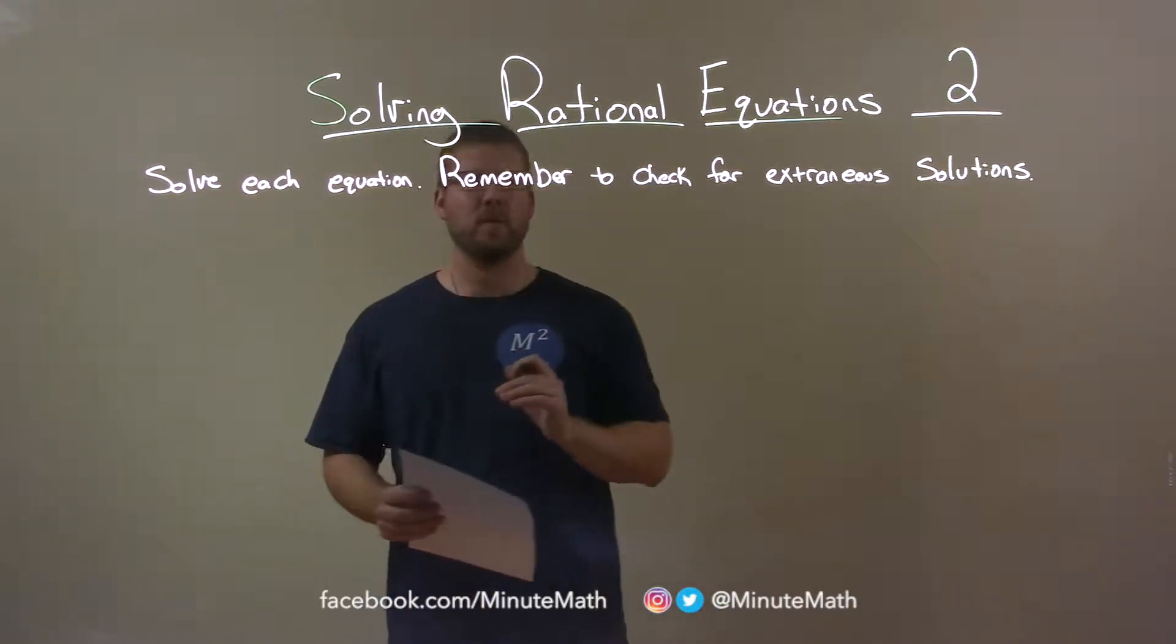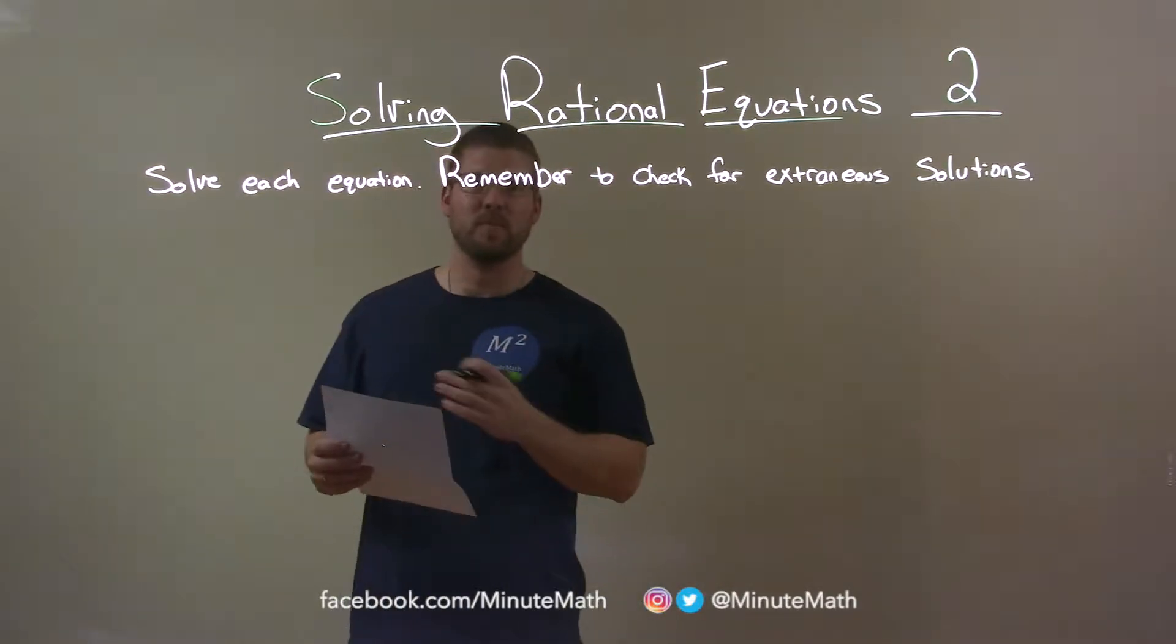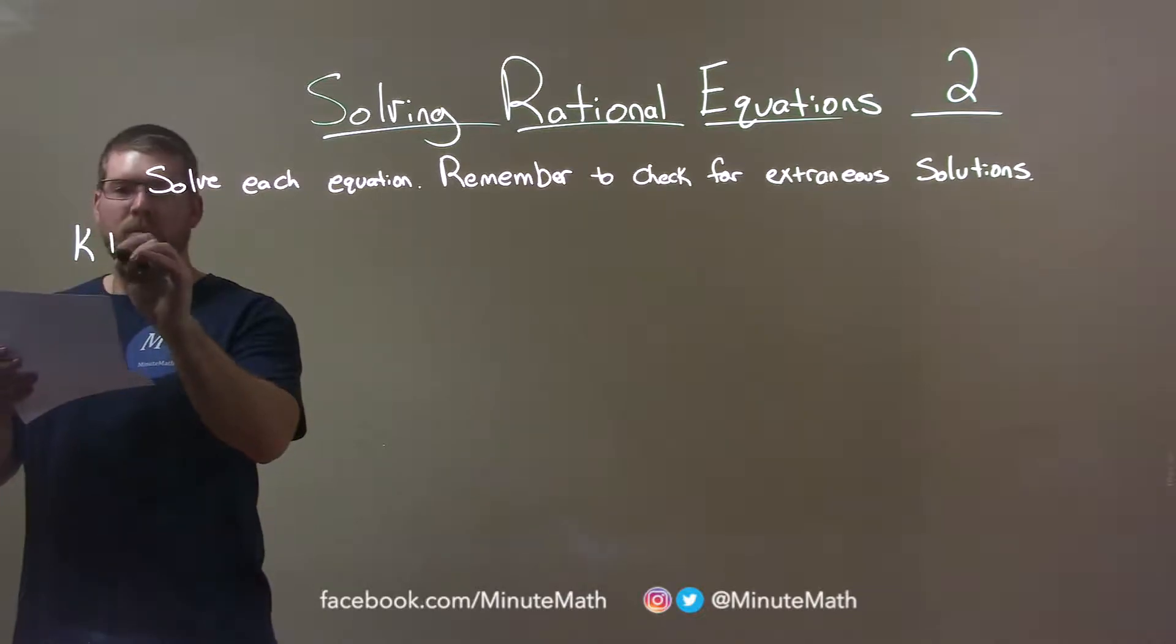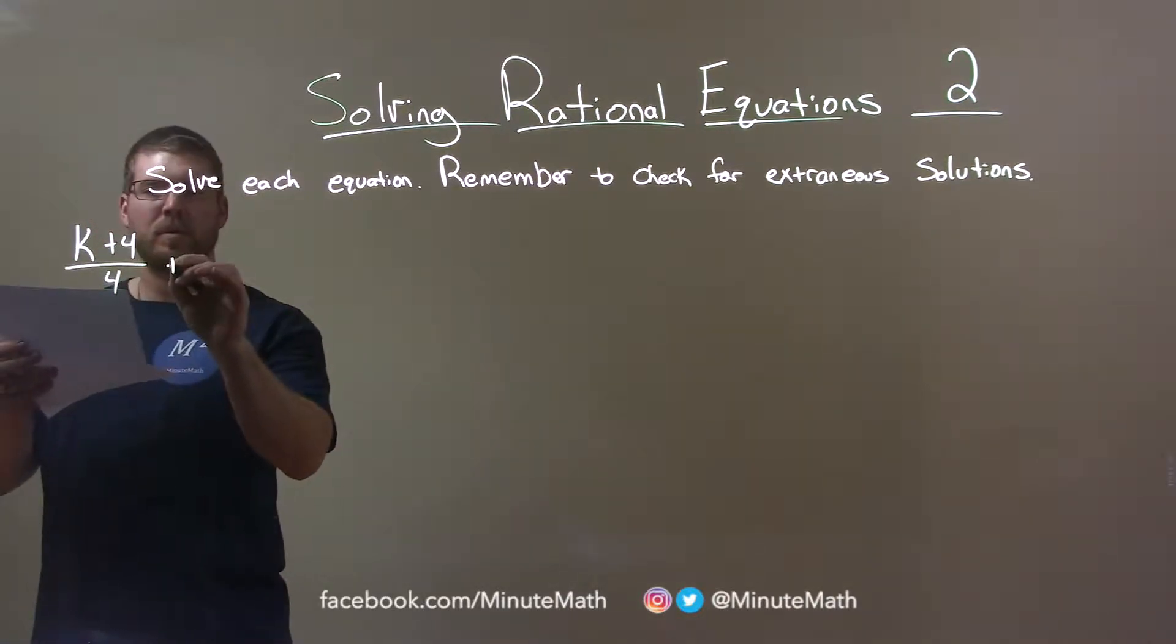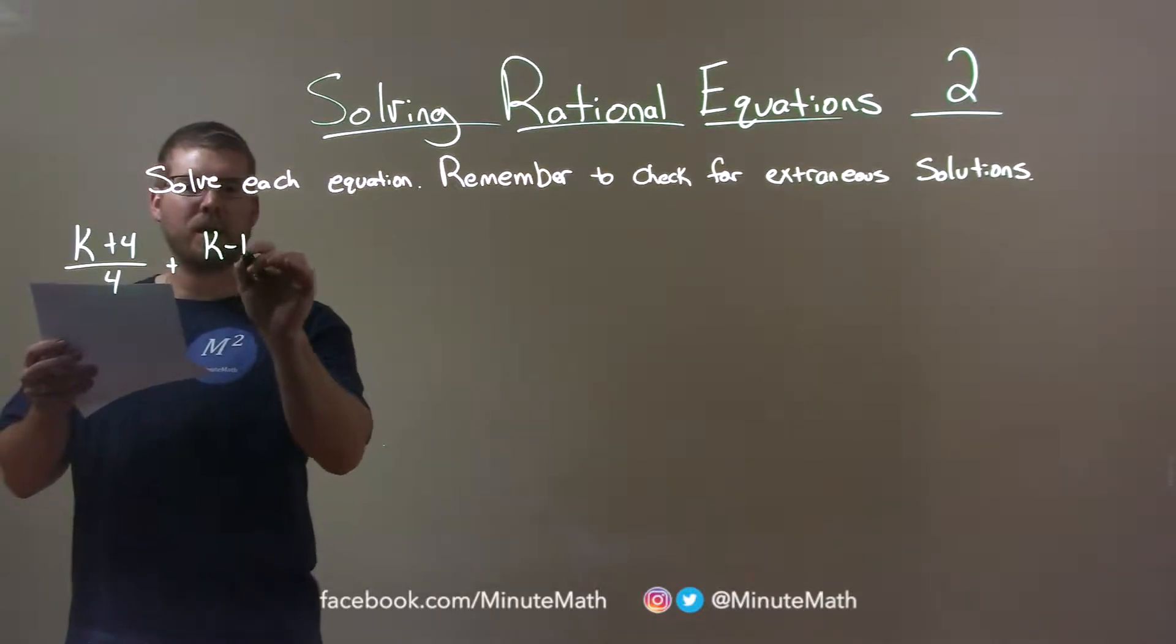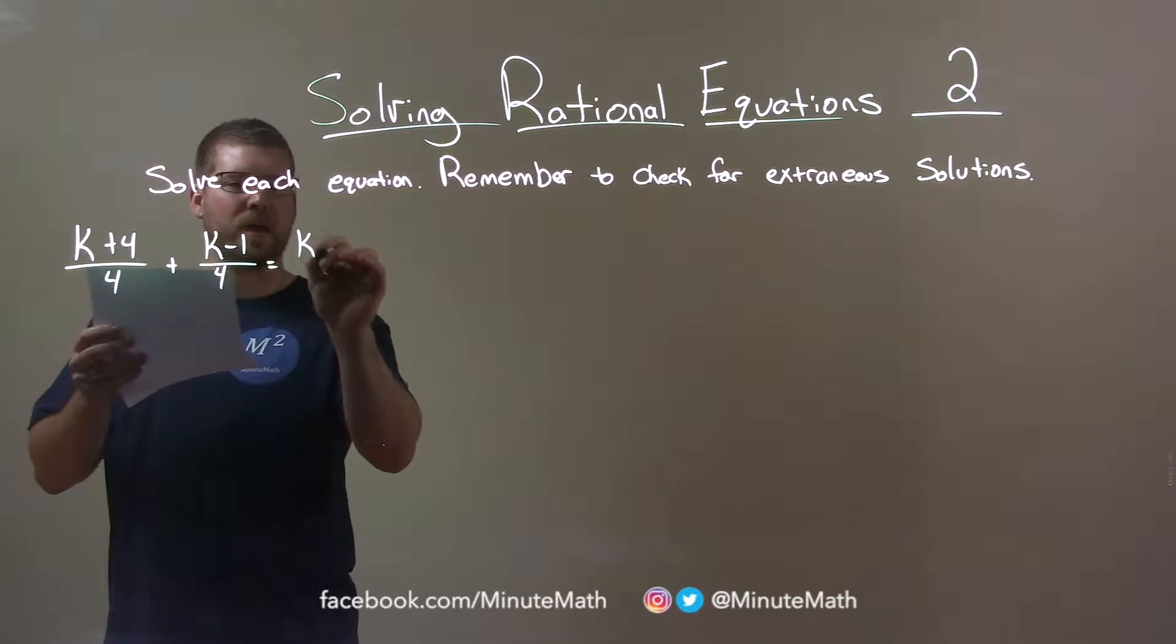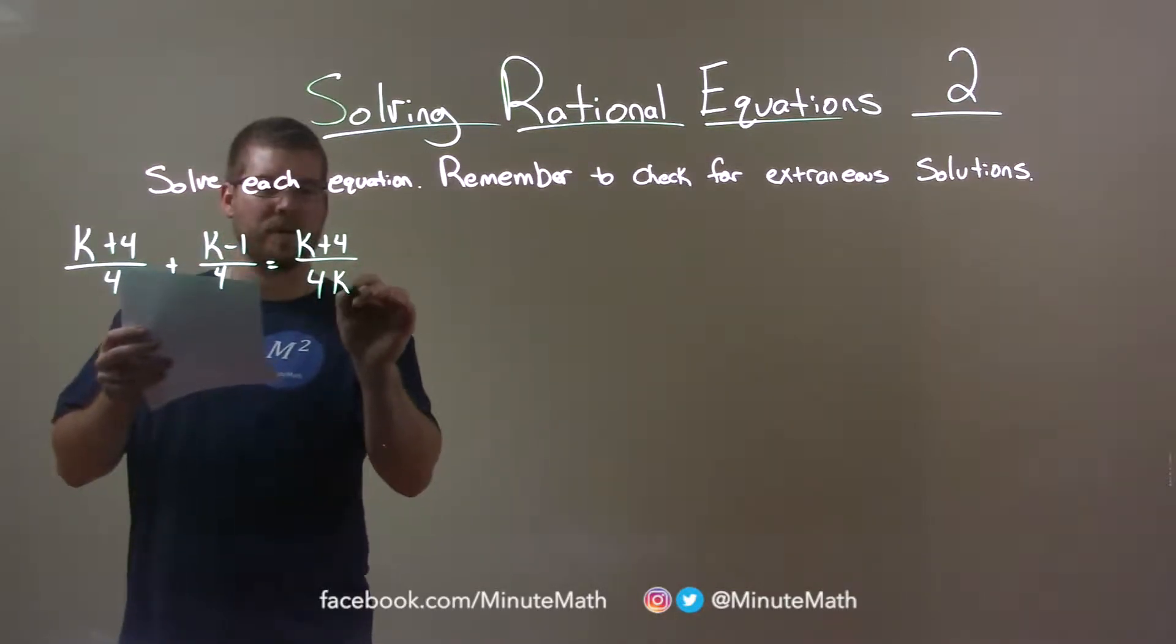We're going to solve each equation and remember to check for extraneous solutions. If I was given this problem: k plus 4 over 4 plus k minus 1 over 4 equals k plus 4 over 4k.